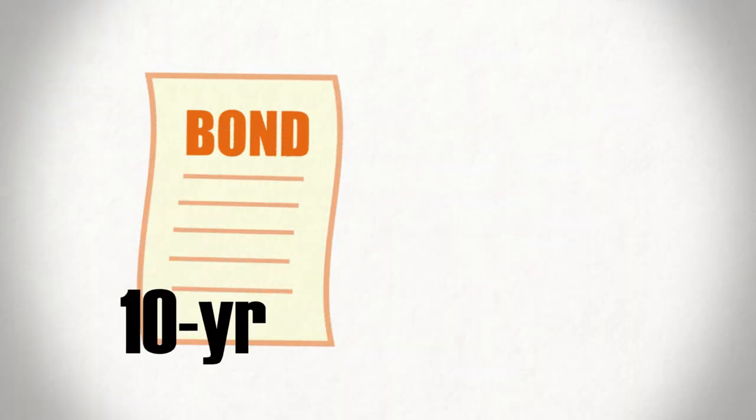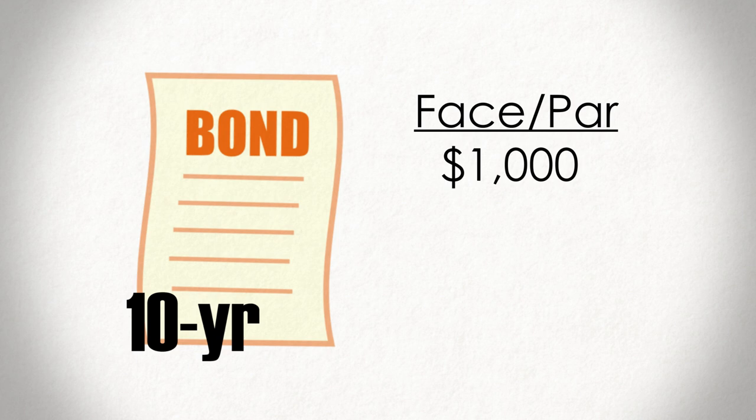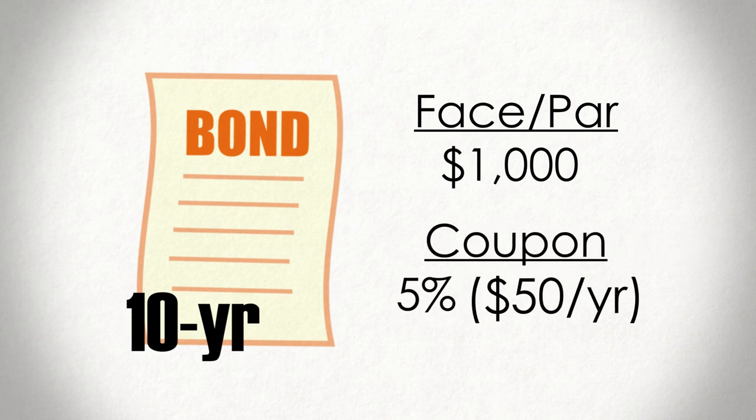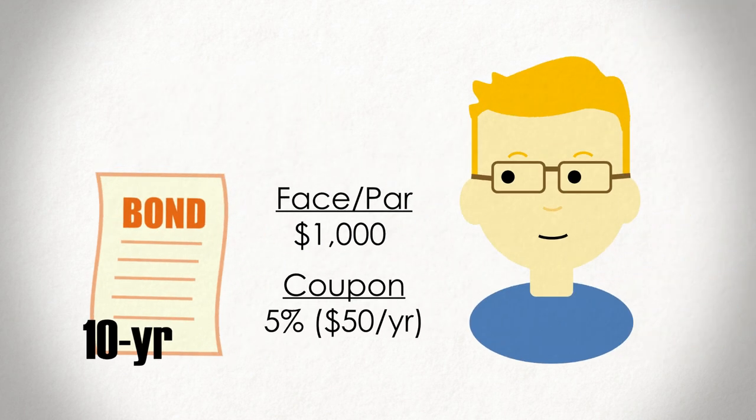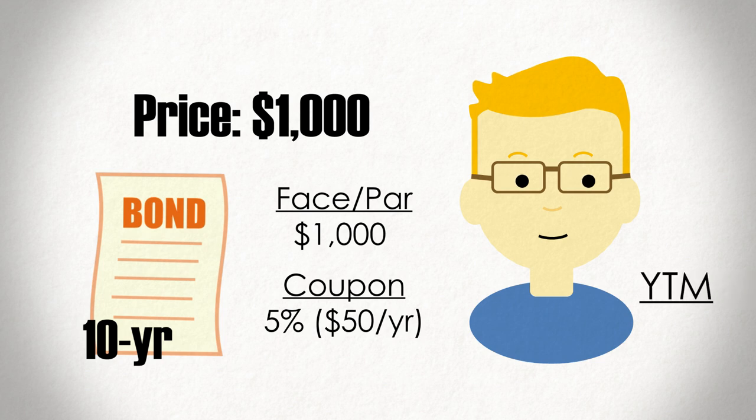For example, imagine you have a 10-year, $1,000 face value bond that pays a 5% coupon or $50 a year. If this bond sold for $1,000, then your yield to maturity or return would be around 5%, assuming annual compounding. If it sells for $1,300, your yield to maturity is around 1.7%. If it sells for $1,600, well, your yield becomes negative 0.8%.